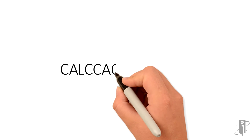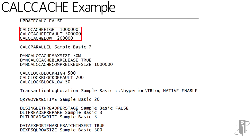In my simple Essbase CFG file I have three calc cache lines. I didn't bother saying calc cache true because true is on by default, but I did want to override the default calc cache value and also set a high and a low. So I set calc cache high to 1,000,000, calc cache default to 300,000, and calc cache low to 200,000. Then within my Essbase calc script I can say set cache high, default, low, off, or all.